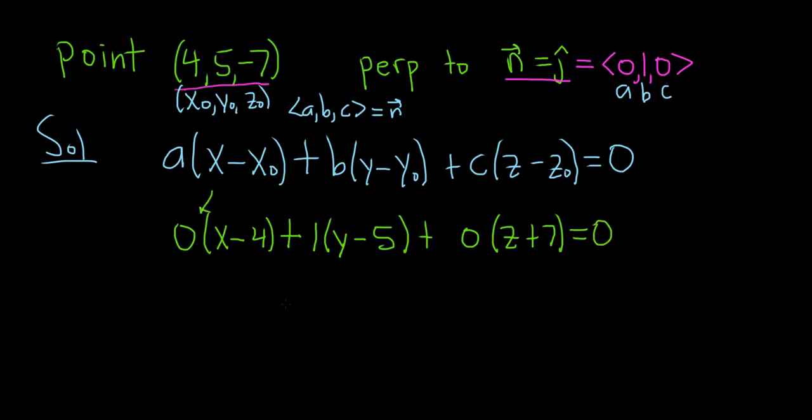This completely goes away. So we just get 0, plus y - 5, plus 0, because 0 times anything is 0. This is equal to 0. What a great problem. y - 5 is equal to 0. And so we simply get y equals 5.